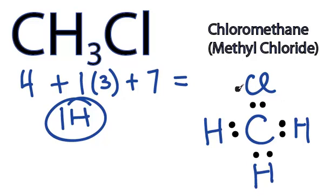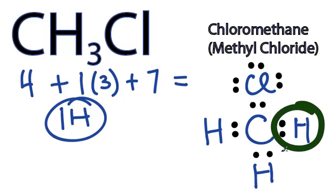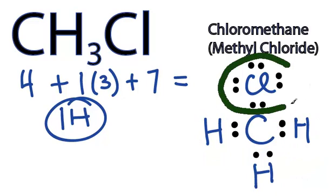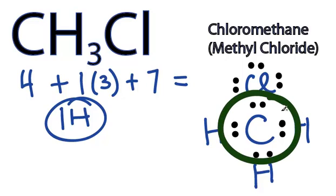And then around the chlorine, 10, 12, 14 valence electrons. Let's see if we have full outer shells. Hydrogen only needs 2 valence electrons, so the hydrogens are all okay. Chlorine needs 8. It has 8. And carbon also needs 8, which it has.